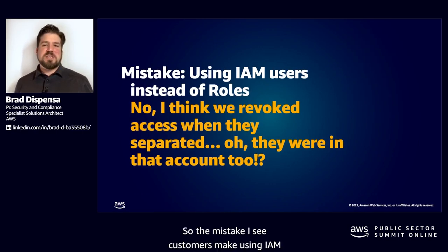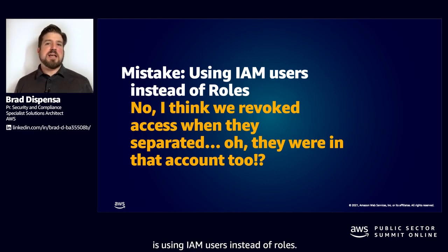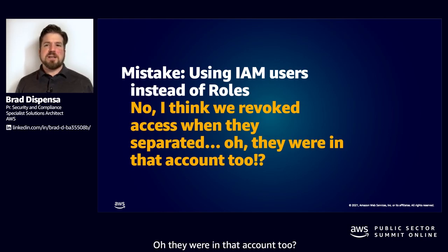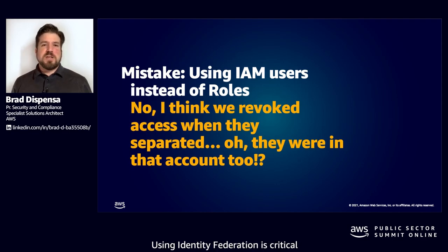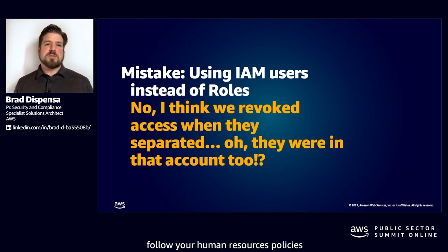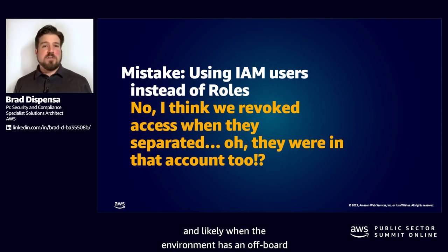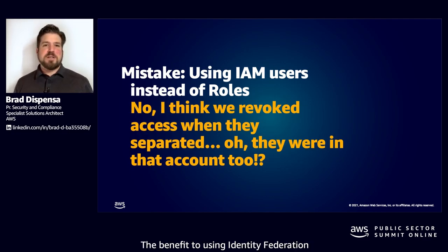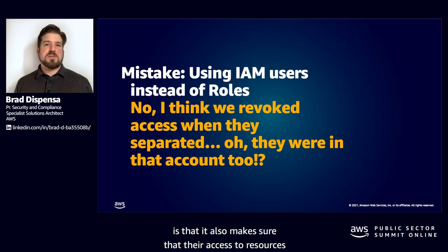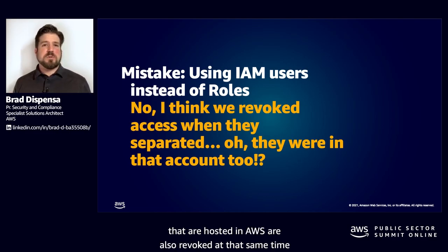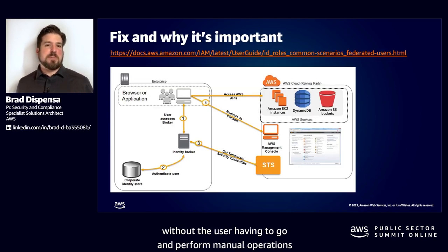Next is IAM. The mistake I see customers make is using IAM users instead of roles. The often response is: I think I revoked access when they separated — oh, they were in that account too? Using identity federation is critical because it ensures your onboarding and offboarding procedures follow your human resources policies. When someone is added to the organization, they're tied into your central identity provider, and when someone separates, that access is also deprovisioned. The benefit is that access to AWS resources is also revoked at the same time without manual operations in the account.